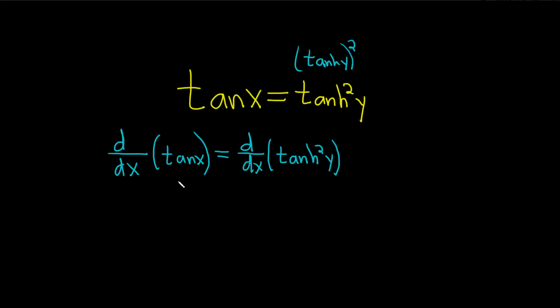All right, so on the left-hand side, the derivative of tangent is simply secant squared. So this is secant squared of x.